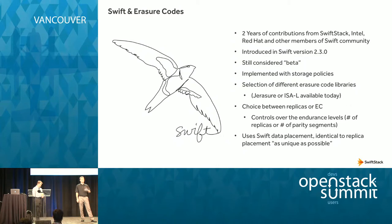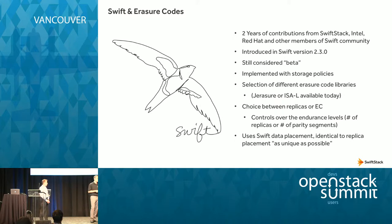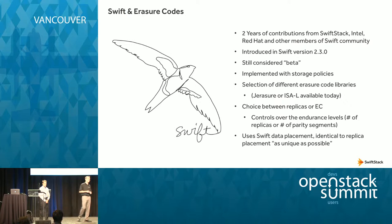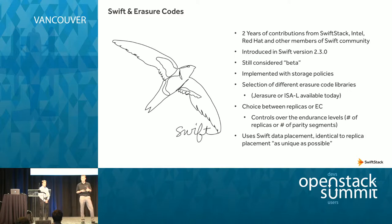From a Swift perspective, erasure codes have been coming for a while. This is something that has been worked on for close to about two years now, and there have been contributions from a lot of people. SwiftStack has helped lead the way alongside Intel, which has made major contributions, along with Red Hat and other members of the community. Erasure codes have just been released with the Kilo version of Swift, version 2.3.0.